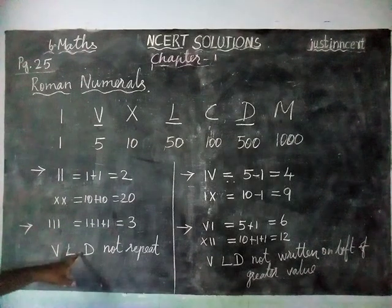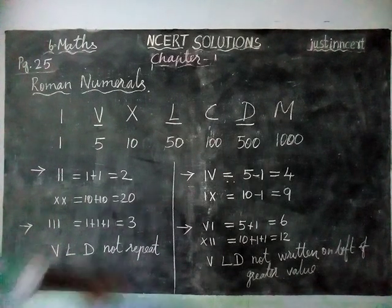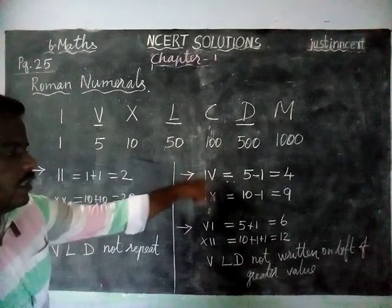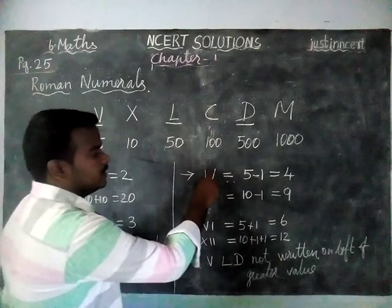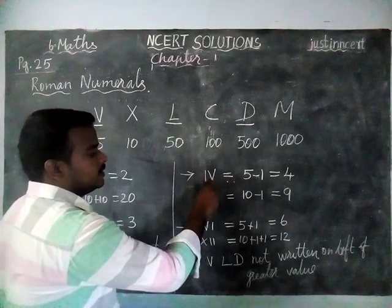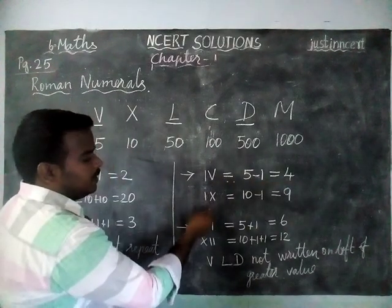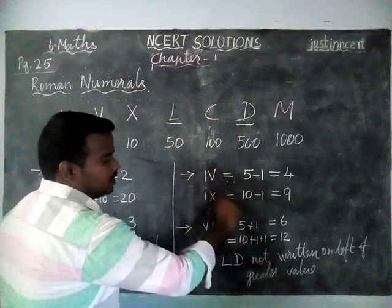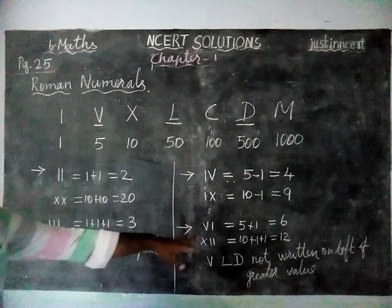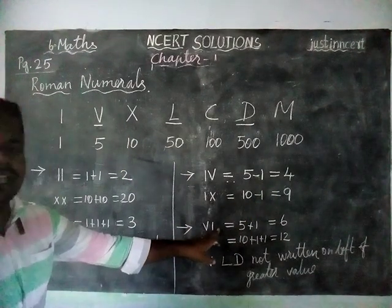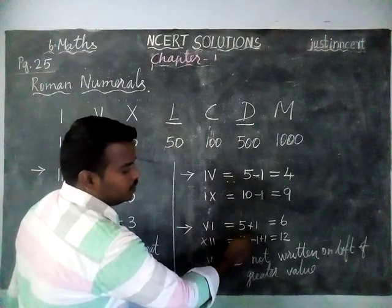Next rule: when a smaller value is written on the left-hand side of a greater value, the value will be subtracted. Example: I, V — greatest value is 5, so we are subtracting 1 — 5 minus 1 is equal to 4. Next example: X value is equal to 10, I value is equal to 1, so 10 minus 1 is equal to 9. And next: if a smaller value is written on the right-hand side, the value will be added. So V, I — V value is 5, I value is 1, 5 plus 1 is equal to 6. X, I, I — 10 plus 1 plus 1 is equal to 12. And here also, V, L, D is not written on the left-hand side of a greater value.